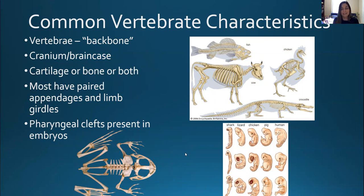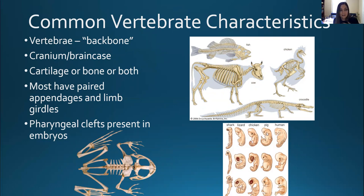Most vertebrates have paired appendages and limb girdles — though there are often exceptions. Take snakes: you might say they don't have paired appendages, but in most snakes you can actually find vestigial leg bones and a pelvic girdle. Vertebrates also share a characteristic in their embryonic development: pharyngeal clefts, sometimes called pharyngeal pouches, which look like gill slits. These are the primitive structures that will lead to the respiratory system, and in different taxa that can mean gills or lungs. As early embryos you can see those pharyngeal clefts across all vertebrates.